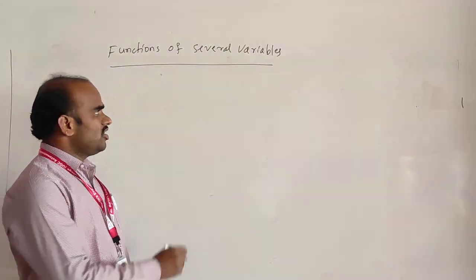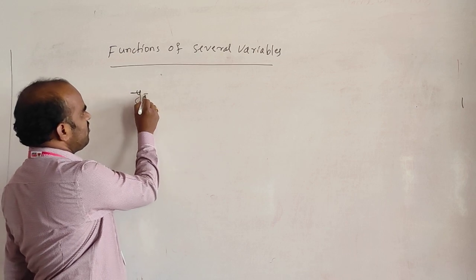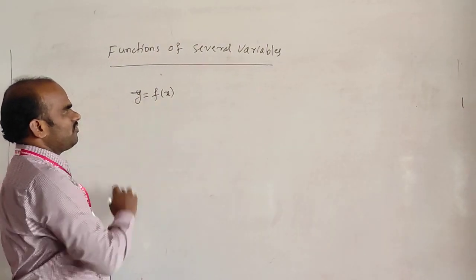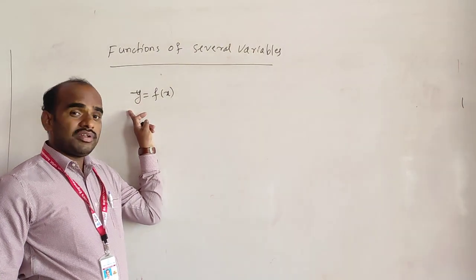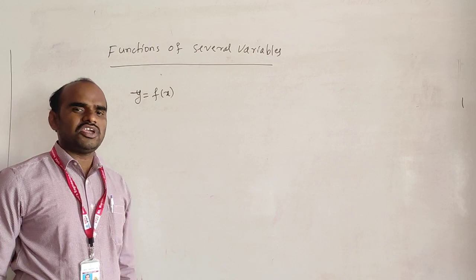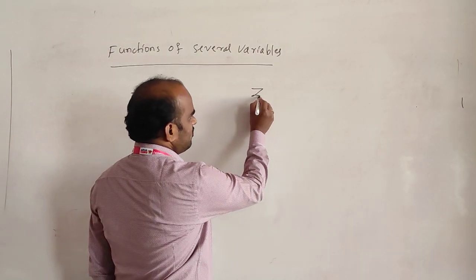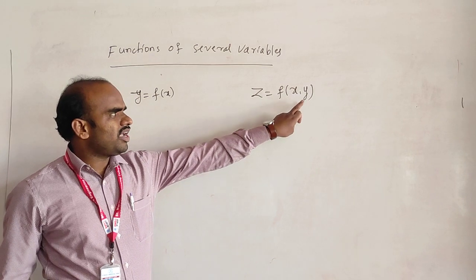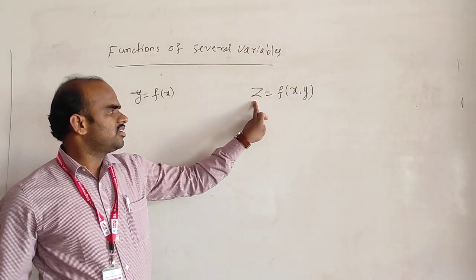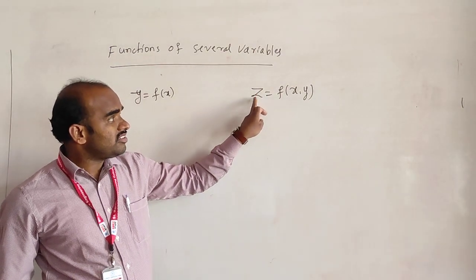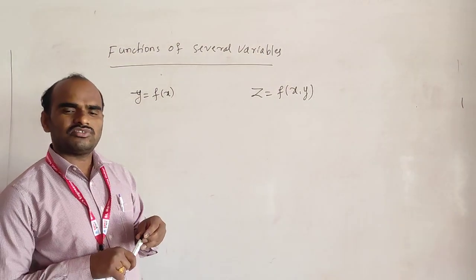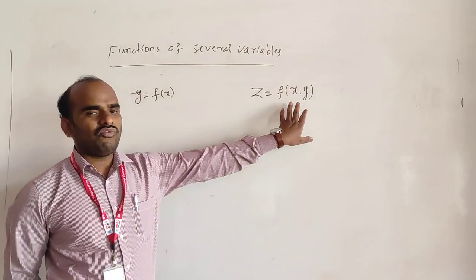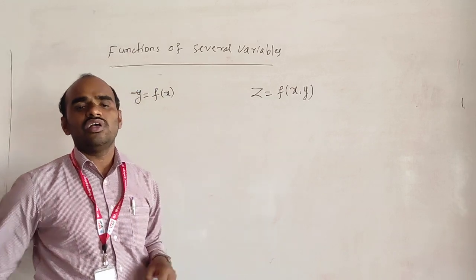Functions of several variables. First I will discuss what is the function of single variable: y is equal to f of x, where x is the independent variable and y is the dependent variable. In case of z is equal to f of x comma y, here x and y are independent variables and z is the dependent variable — z is a function of two variables. This is called the function of two or more variables, simply called the function of several variables.